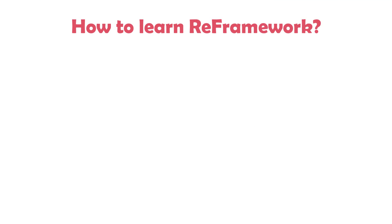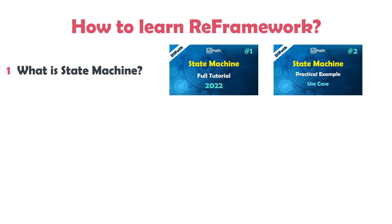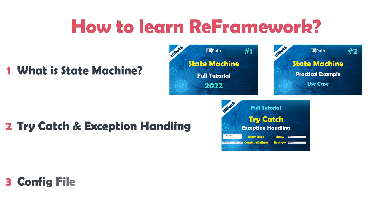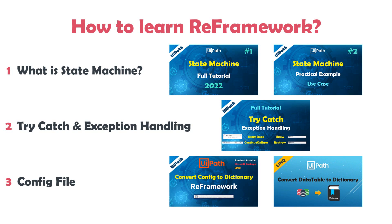At the end of this video, here is what you have to do to learn re-framework easily. First, since the project is based on state machine, you must learn what state machine is and how to use it — watch the two state machine videos on my channel. Then learn about try-catch and exception handling, because we use try-catch in this template in different states and it is very important. Watch the try-catch video on my channel. Finally, watch the config file video — it explains what the config file contains and how to use it, since it is used to store variables for the process. Once you watch these videos, you are ready to learn re-framework.